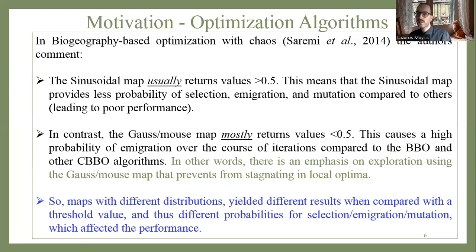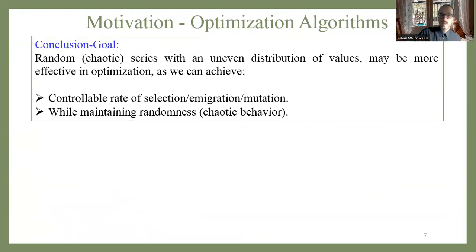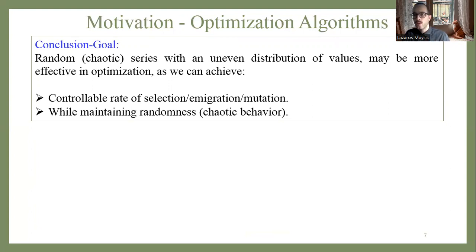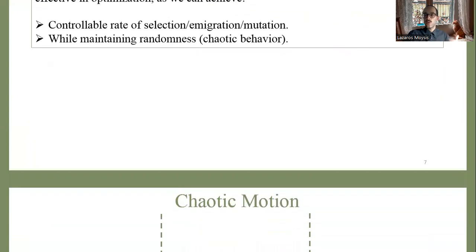Some maps didn't perform much migration and selection and had poor performance, while others like the Gauss map performed more emigration actions and had much better performance — because that map gave more emphasis to exploration and did not stagnate into local optima. The bottom line is that using different chaotic maps with different statistical characteristics, albeit all chaotic, we may obtain different algorithm behavior and in some cases improved performance over purely random behavior.